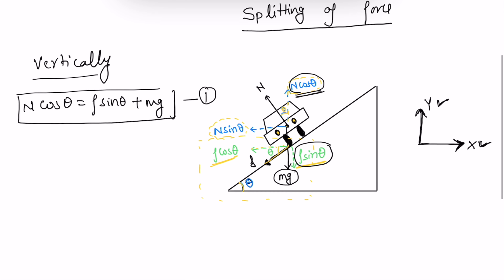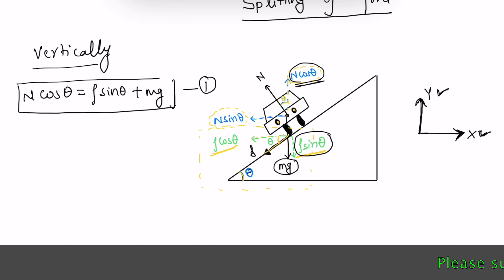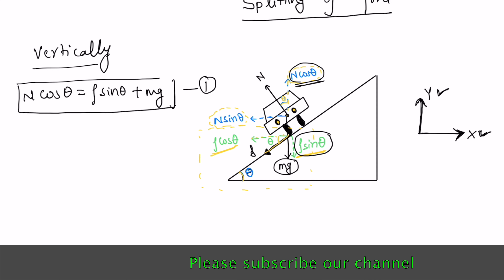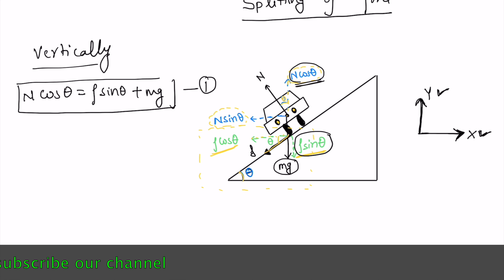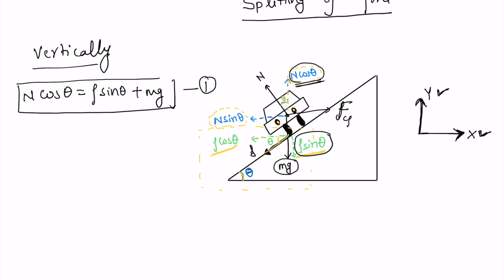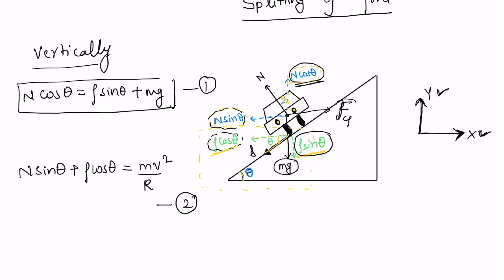Similarly, if we look along the x-axis, we have N sinθ and F cosθ as forces. These will be opposite to the centrifugal force. The centrifugal force, which I denote as FC, gives us: N sinθ plus F cosθ equals the centrifugal force mv²/r. This is my second equation. These are the two forces on our x-axis which are opposite to the centrifugal force.